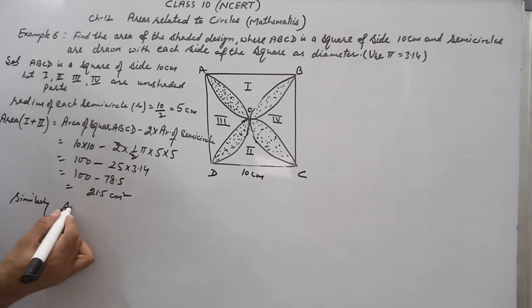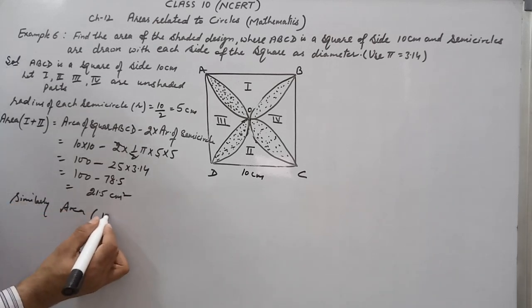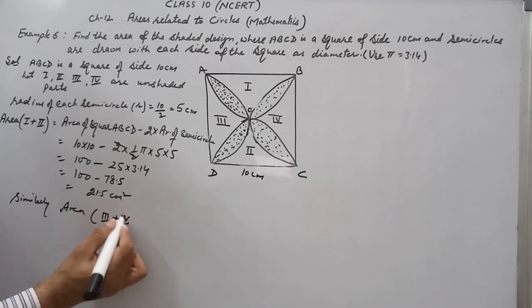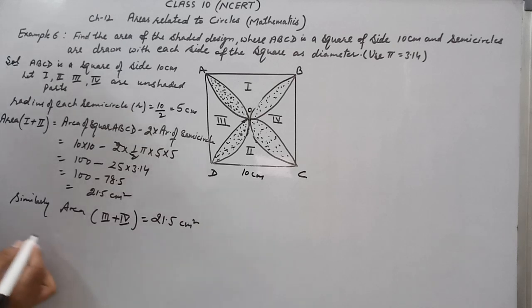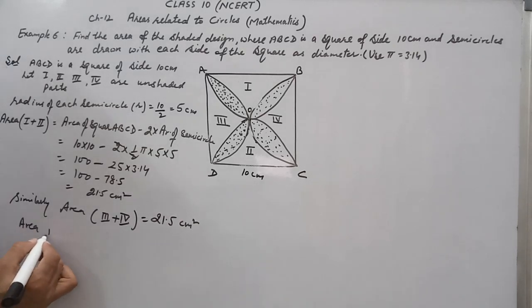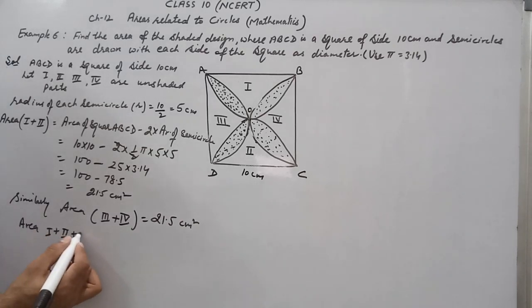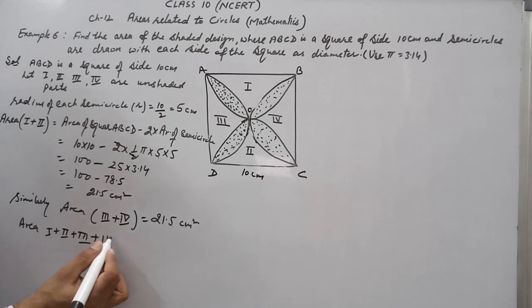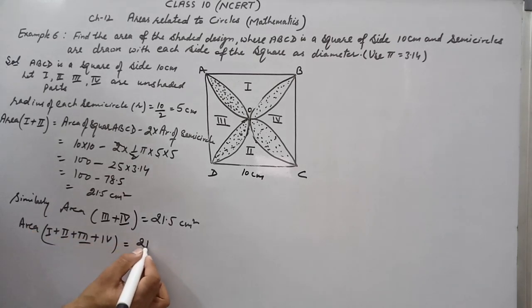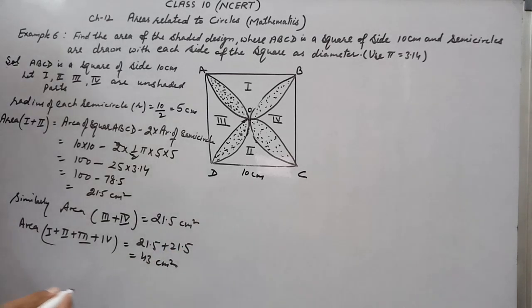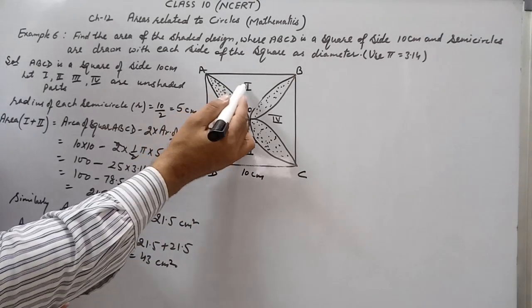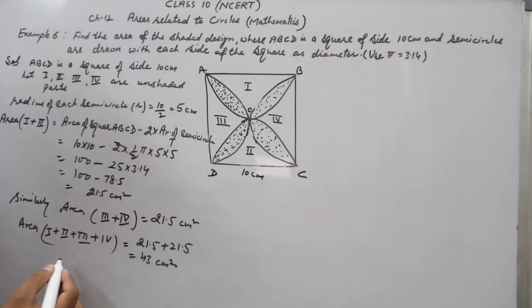Similarly, area 3 plus 4 is also 21.5 cm². So the total unshaded area = area 1 + 2 + 3 + 4 = 21.5 + 21.5 = 43 cm².